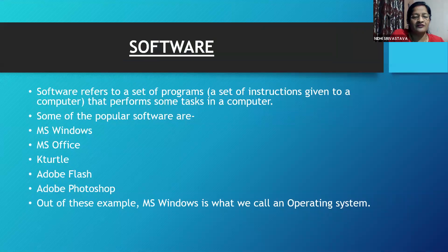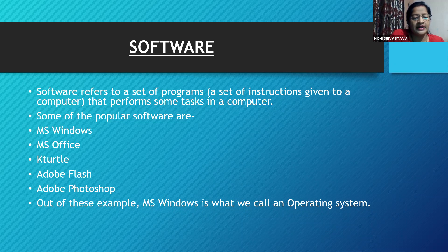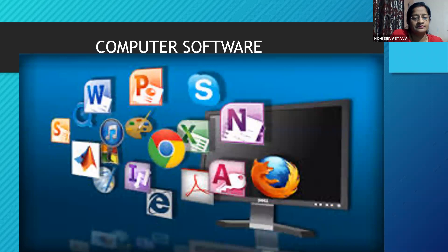Software refers to a set of programs, a set of instructions given to a computer that performs some tasks in a computer. Some of the popular software are MS Windows, MS Office, KTurtle, Adobe Flash, and Adobe Photoshop. Out of these examples, MS Windows is what we call an operating system.